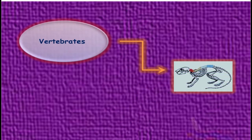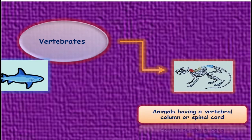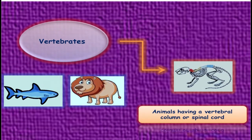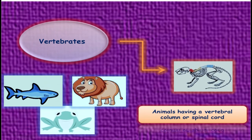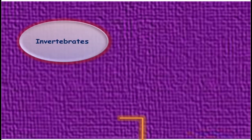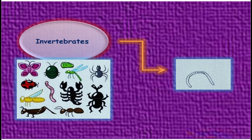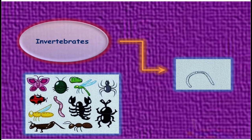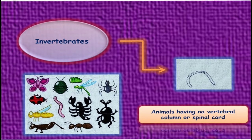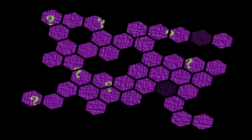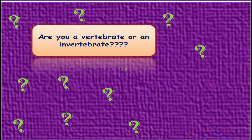Examples of vertebrates include fish, tiger, and frog. Invertebrates are animals that don't have a backbone — examples include earthworm and butterflies. Now think: are you a vertebrate or an invertebrate? You will find the answer if you touch your back.